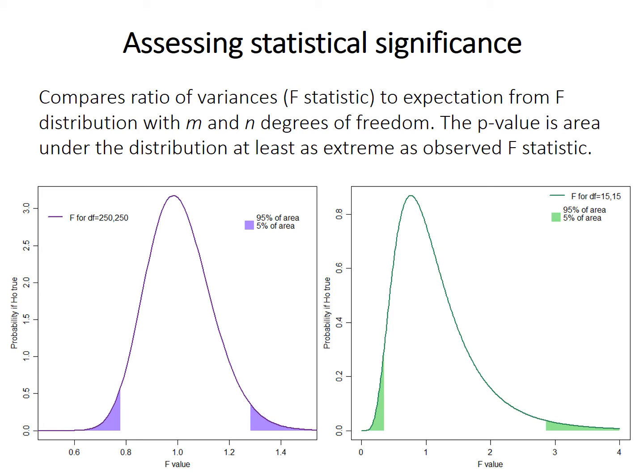The distribution on the left, which has larger sample size or larger degrees of freedom, indicates that the expected values of F are all fairly close to 1. It's pretty unusual to find a value smaller than 0.75 or bigger than 1.25. That's because large samples are less likely to just randomly differ from the population they come from.